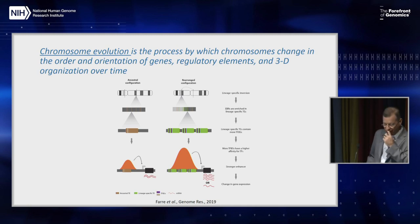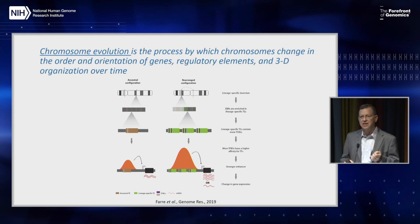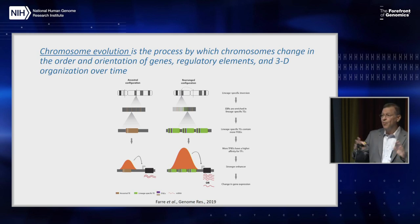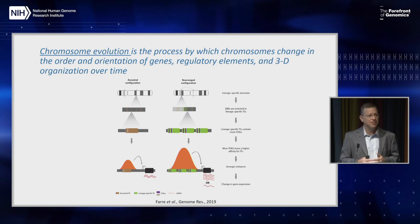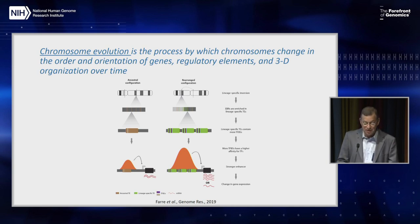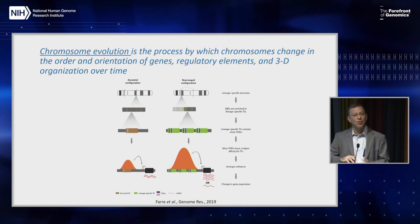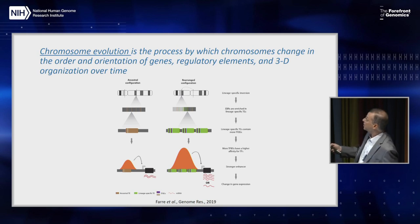In the last few minutes, I want to give a few examples from my own research on how chromosome-scale assemblies can assist us in understanding very deep and complex problems in evolution. Chromosome evolution is a process by which chromosomes change in the order and orientation of genes, regulatory elements, and three-dimensional structure over time. What you first need are chromosome-scale assemblies so that you can define the lineage-specific breakpoints in chromosome evolution over time.